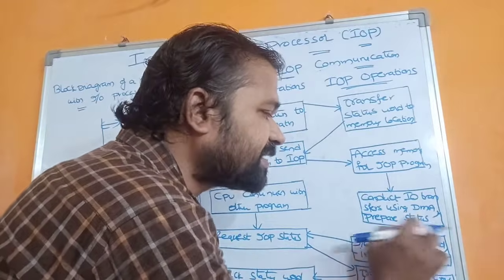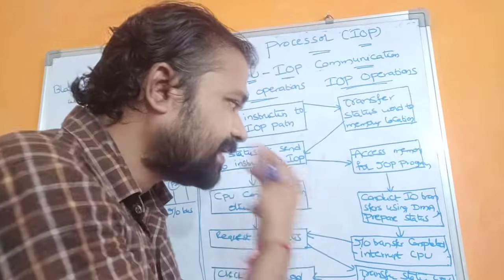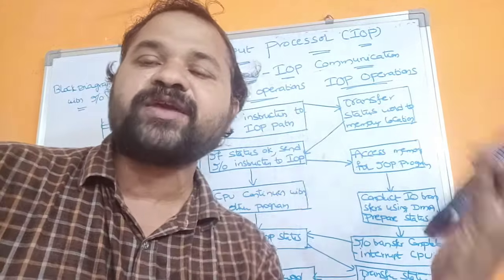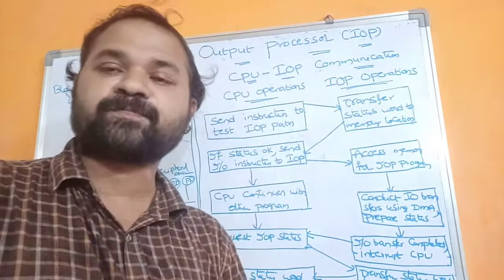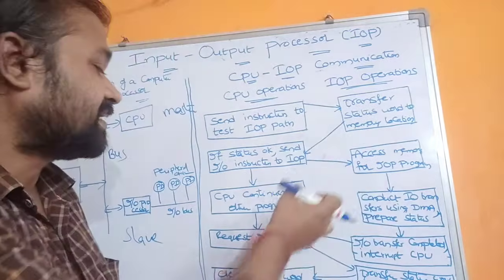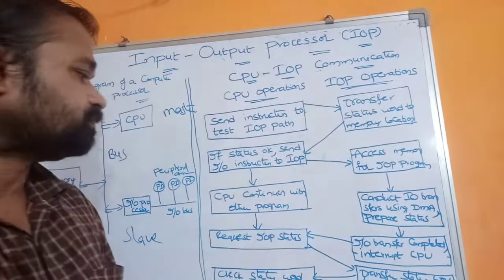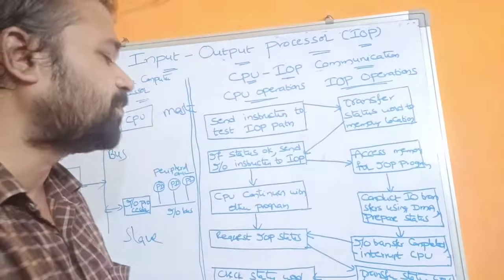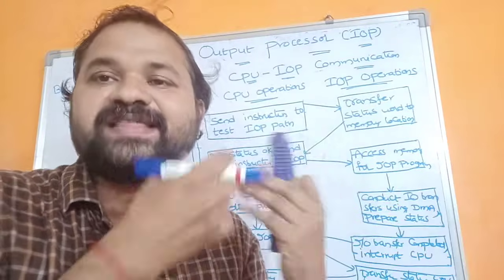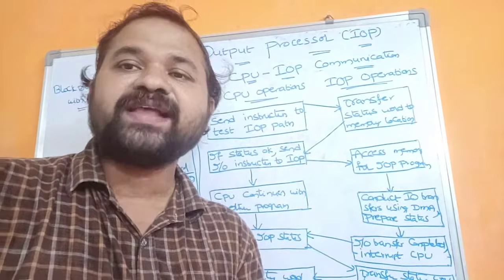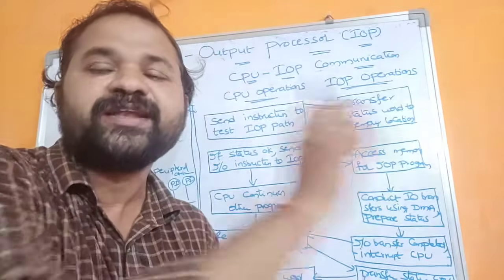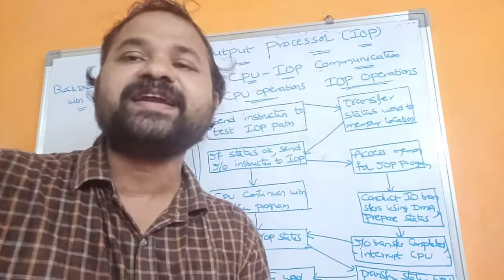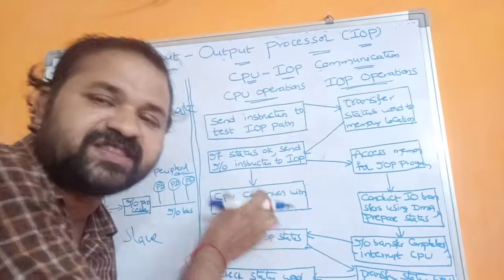The I/O processor conducts I/O transfers using DMA (Direct Memory Access) and prepares the status. Once the transfer is over, it sends the corresponding status to the CPU. In the meantime, the CPU continues with execution of other programs while the I/O processor is transferring data between I/O devices and memory using DMA.